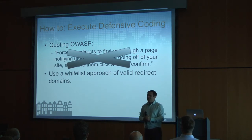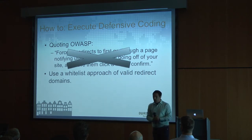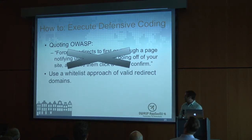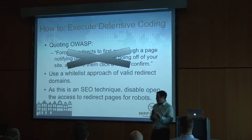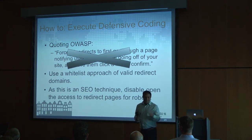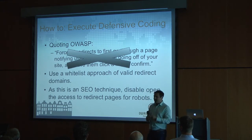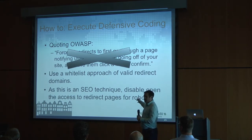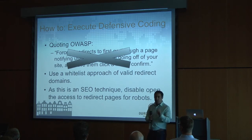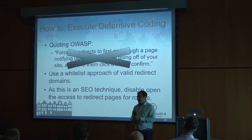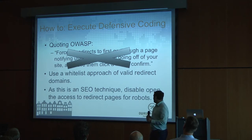We know many business owners will say they need to redirect to every domain and can't manage a whitelist. So a second piece of advice to defend against this particular attack: disable open access via robots.txt. If the attack is against a crawler harvesting links, let's make it harder for them — by disabling crawling of this page and follow links in robots.txt, and also using HTML meta tags to explicitly disable follow links on this particular webpage.